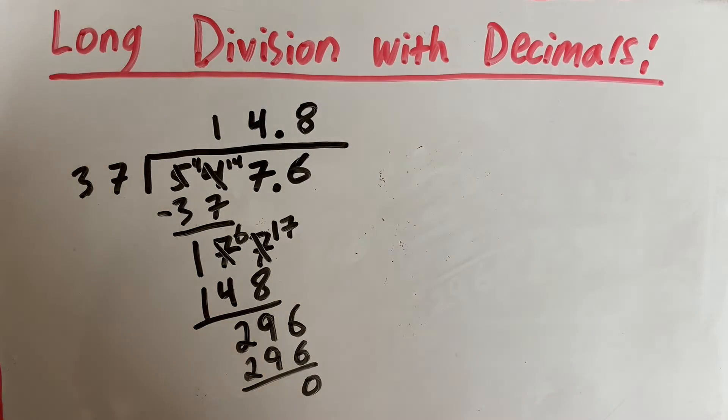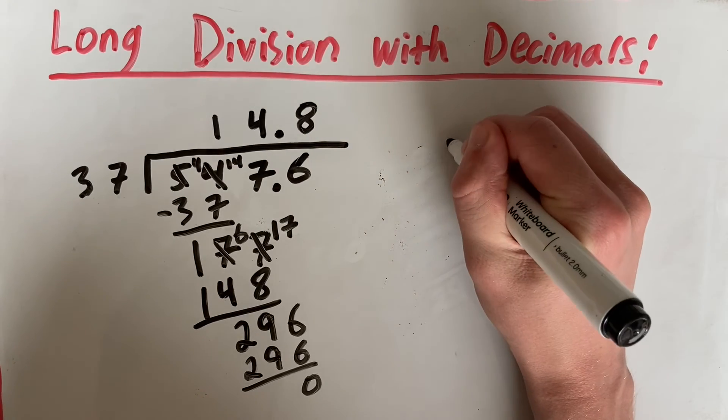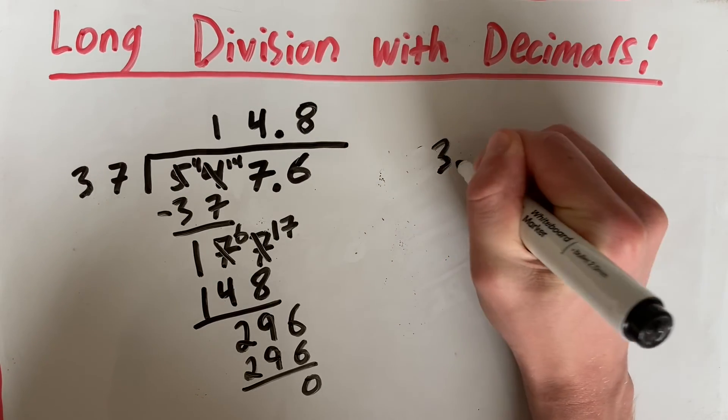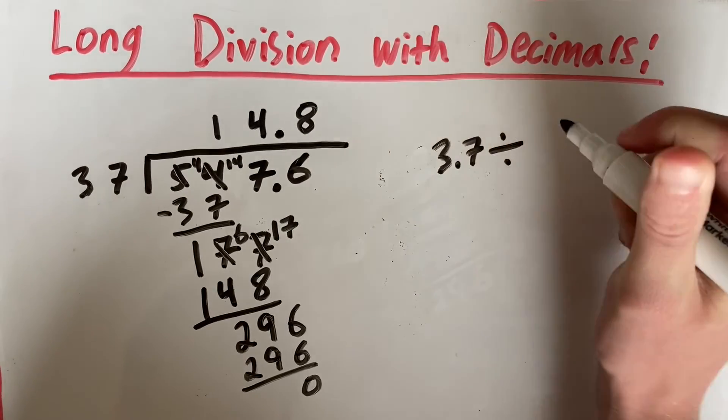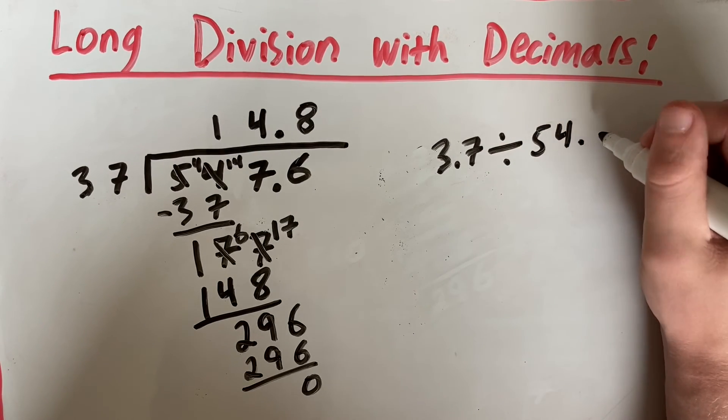And that gives us a remainder of 0. Meaning our answer is 14.8. So 3.7 divided by 54.76, remember that's our original problem before we move the decimals, is equal to 14.8.